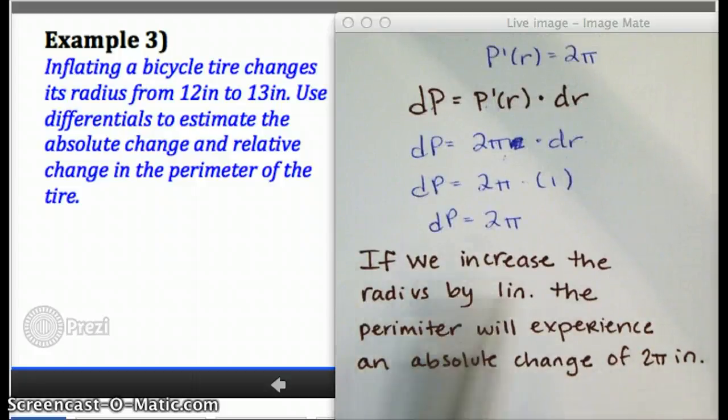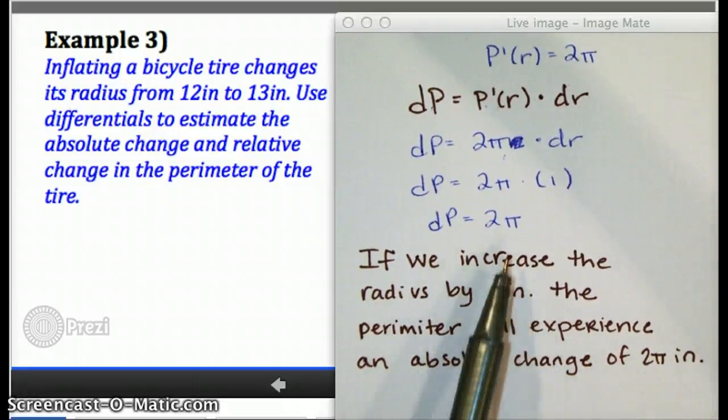And notice I favor the if-then statements. I would say if we increase the radius by 1 inch, the perimeter will experience an absolute change of 2π inches. How did I know that this was absolute change?